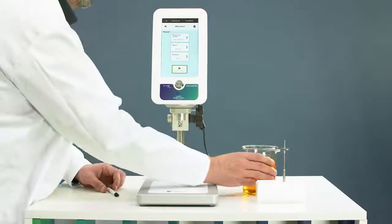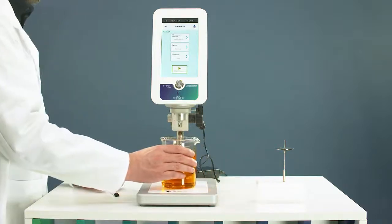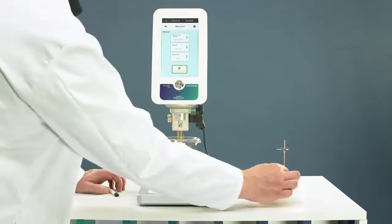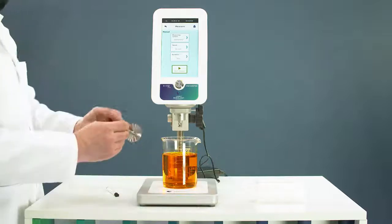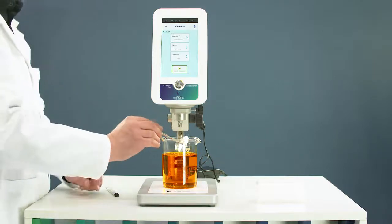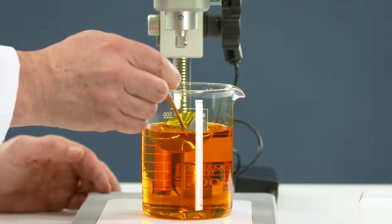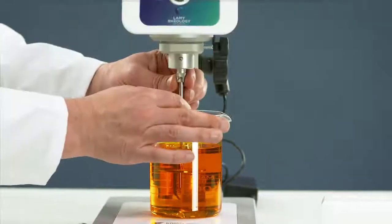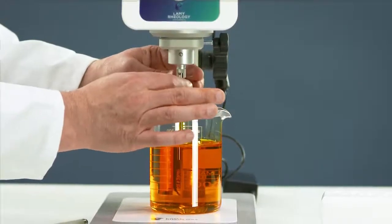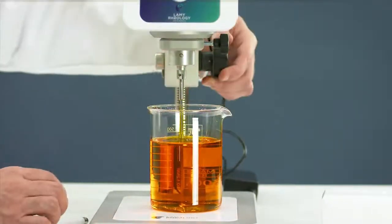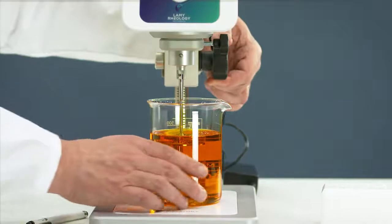Take the beaker with the sample and place it below the device. Take the spindle and tilt it obliquely to avoid air bubbles. Connect the spindle using the easy bayonet coupling. Reach the perfect position by using the mark on the spindle's shaft.